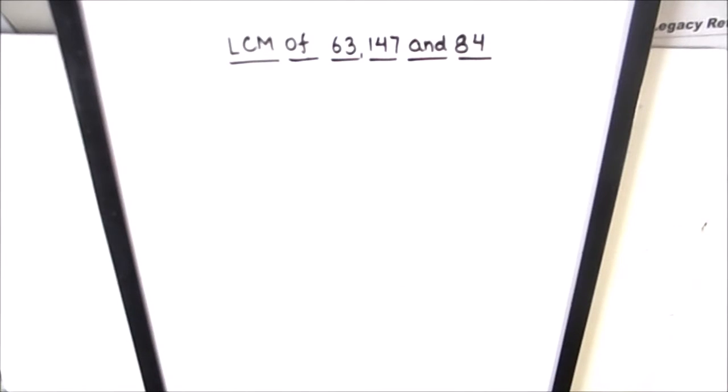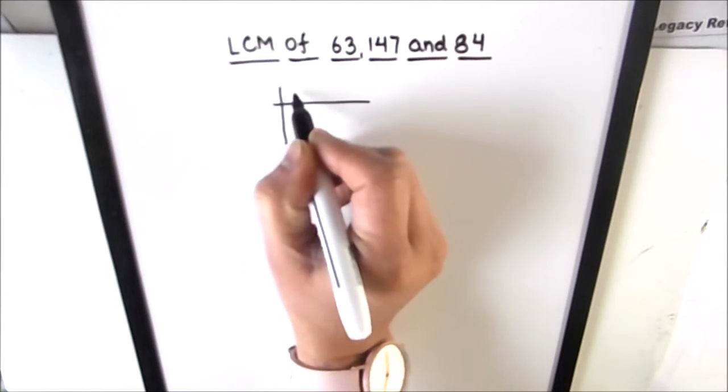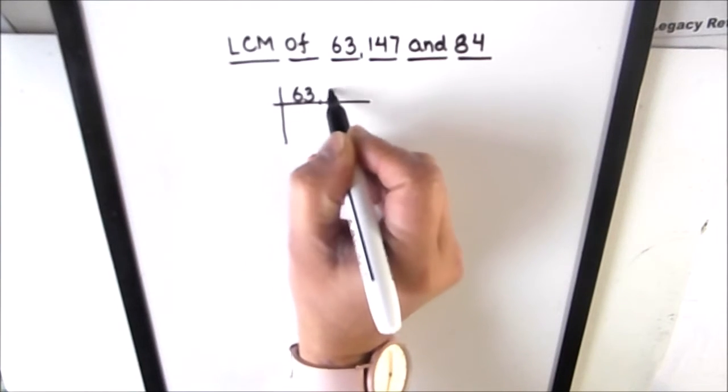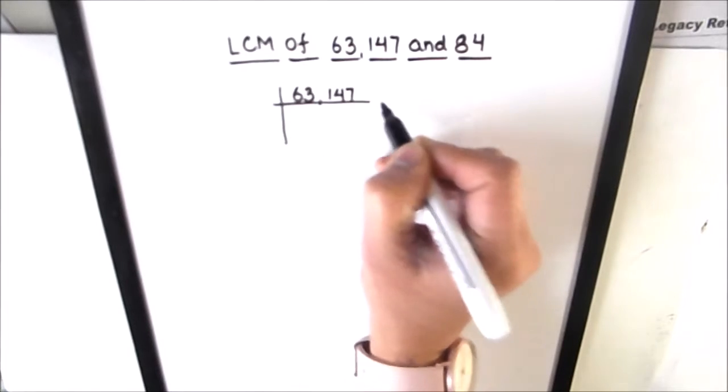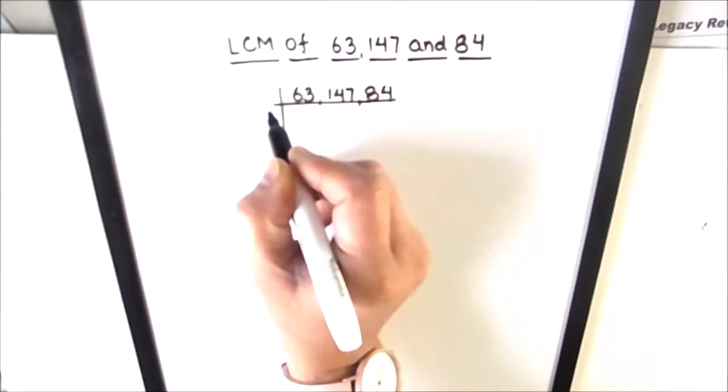Hello students, in this video we are going to learn how to find the LCM of three numbers: 63, 147, and 84. We will be using the prime factorization method to find the LCM of the three numbers.